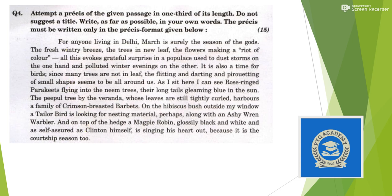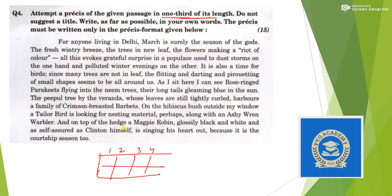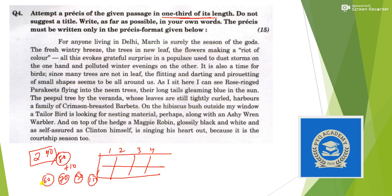Question 4 is precis writing, where you read a passage and write a summary that is one-third the length of the original passage. In the answer sheet you are given a box format and must count the number of words. The word count should not exceed plus or minus 10 words from the target — for example, if the passage is 240 words, the precis should be around 80 words, so between 70 and 90 words is acceptable.